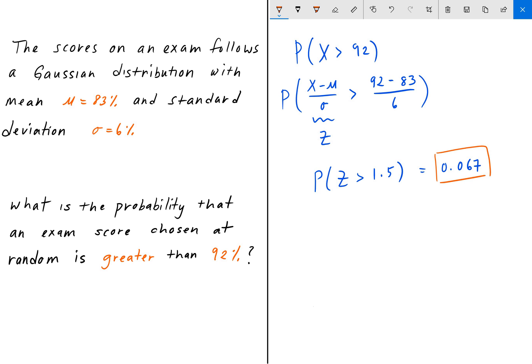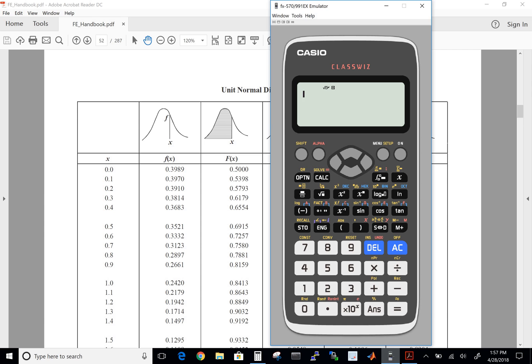Now another way of doing this is to use your Casio calculator. So here I have the Casio ClassWiz again. This is a calculator that is allowed on the exam and it's linked in the description below if you're interested in getting your own. And so we're going to solve the same problem using the Casio calculator.